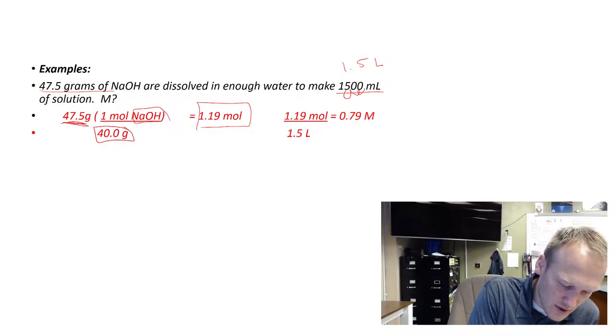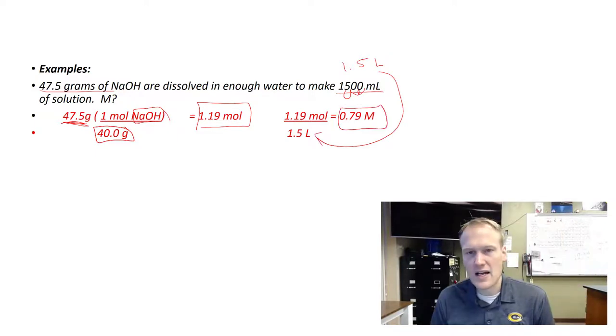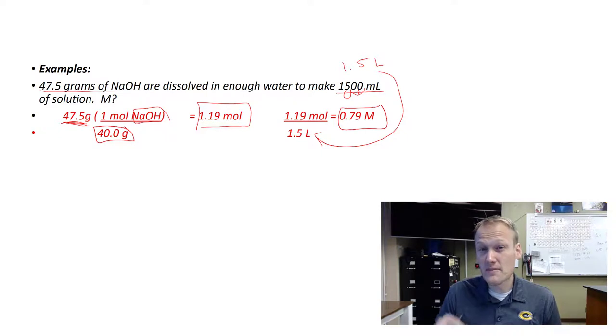Now I can take my 1.19 moles, divide by the liters of my solvent, and I get 0.79 molar. So some of these problems might have additional steps. You need to make sure you have moles of solute and liters of solvent.